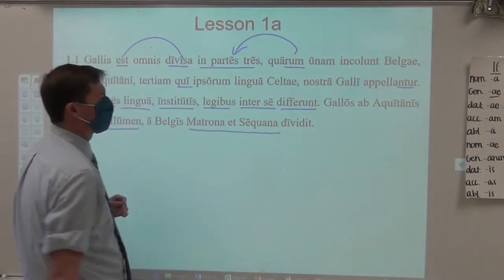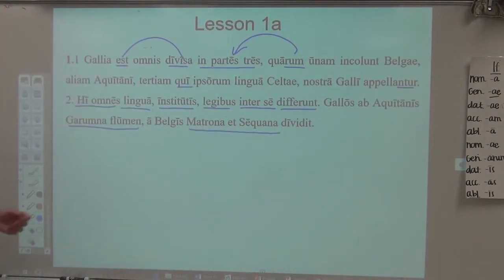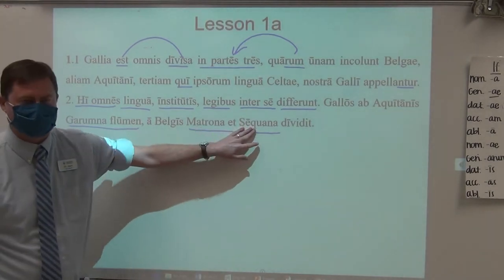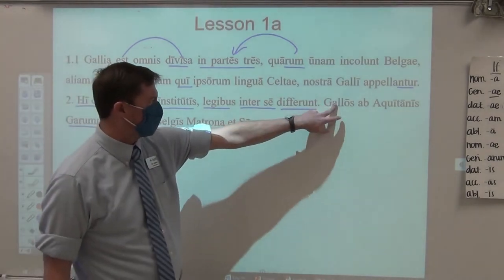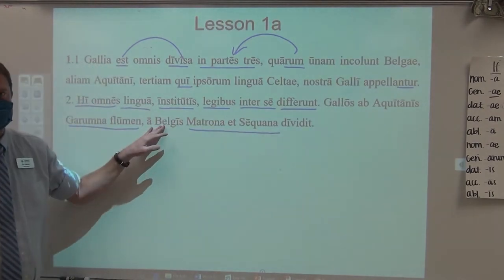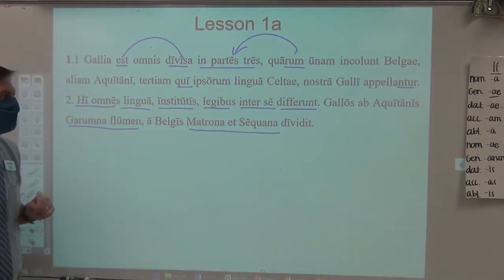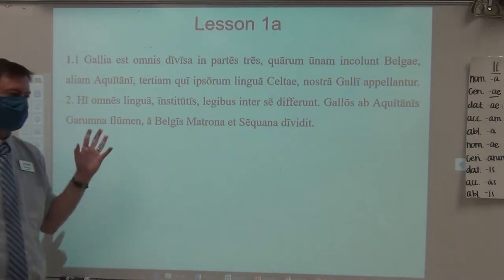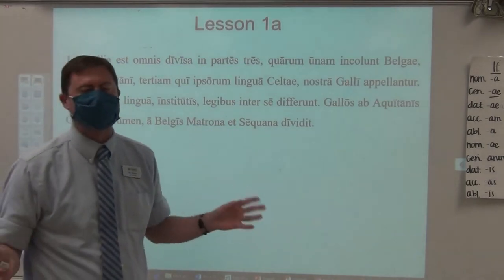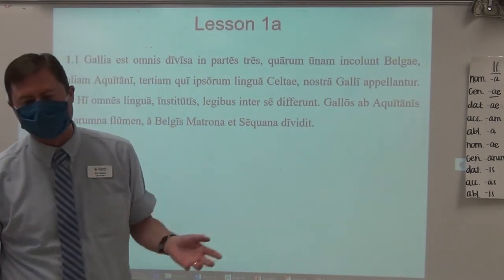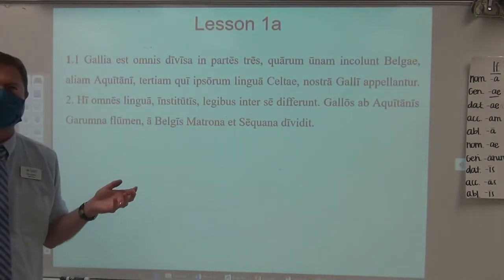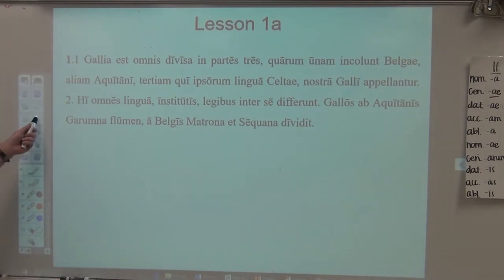The Matrona and the Sequana River — obviously the Marne and the Seine, the main river of Paris — divides those Gauls from the Belgians. It's telling us the borders splitting up these three main sections or regions, kind of like in the United States where almost every single state has a border formed by an actual river. I think there's only two or three states that have no rivers as borders.